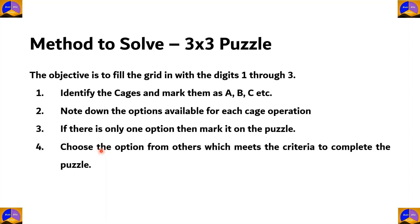1. Identify the cages and mark them as A, B, C, etc. 2. Note down the options available for each cage operation. 3. If there is only one option, then mark it on the puzzle. 4. Choose the option from others which meets the criteria to complete the puzzle.